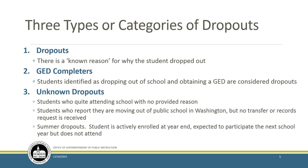Then we have the unknown dropouts—this is the big category we're really going to focus on today. Unknown dropouts are students who quit while attending school with no provided reasons. They may report they're moving out of public school in Washington, but no transfer or records request is received. Or summer dropouts: the student is actively enrolled at the end of the year—'have a nice summer, we'll see you in the fall'—and they never show up.